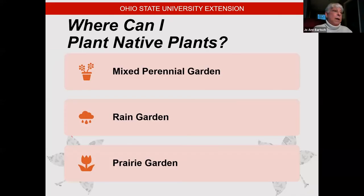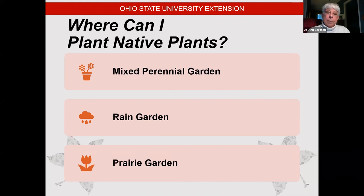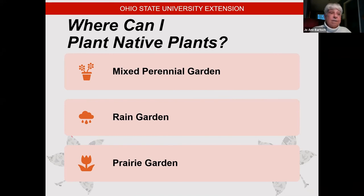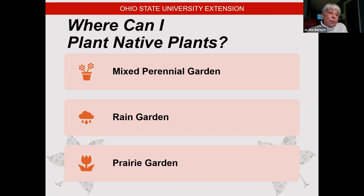Let's talk a little bit about where you can plant native plants. The first commandment of horticulture is you have to put the right plant in the right location, and that goes for natives too. But you have choices when it comes to design. You can mix natives with your perennials. You can devote an entire bed to just natives. You can go really wild and make a prairie garden. You can go semi-wild and make a rain garden. Your style can be formal, informal, or really wild — do what you like.